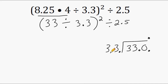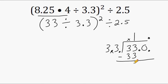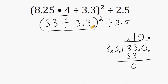So now we're dealing with the number 33. 33 cannot fit inside 3, so we are not allowed to write anything on top of that 3. But 33 goes inside 33 exactly one time, and 1 times 33 is 33, leaving nothing left over. Notice we still have a blank place value sitting between the number 1 and the decimal — we must put a zero there. So 33 divided by 3.3 is equal to 10.